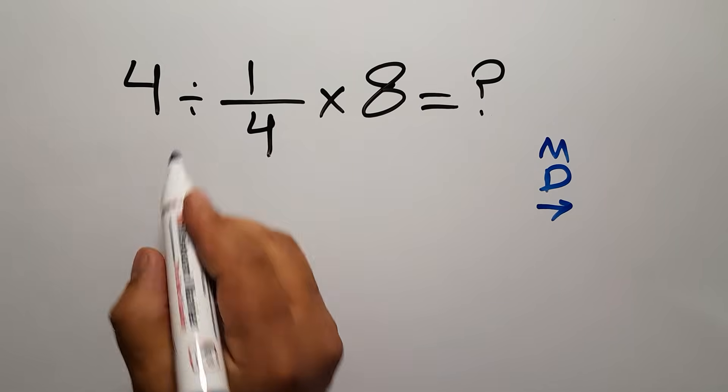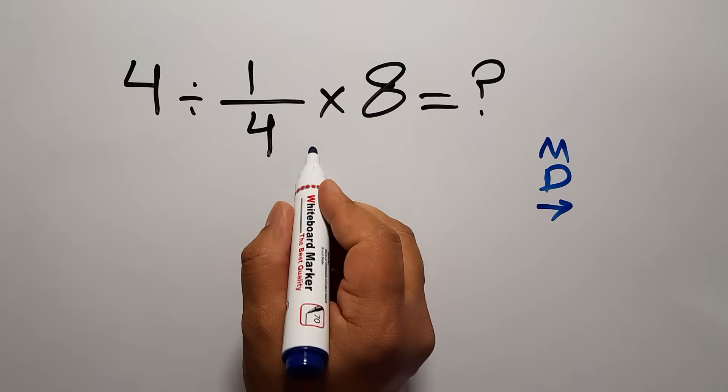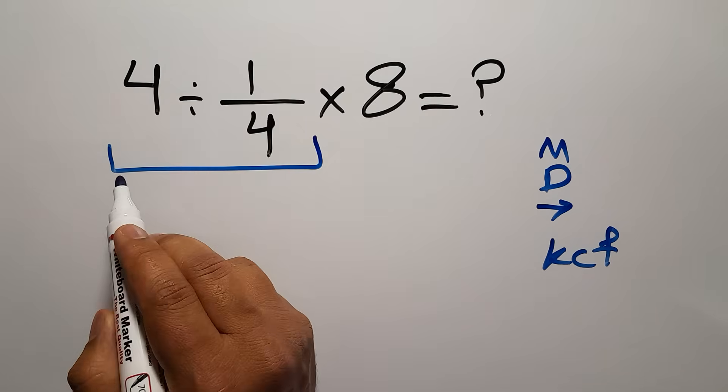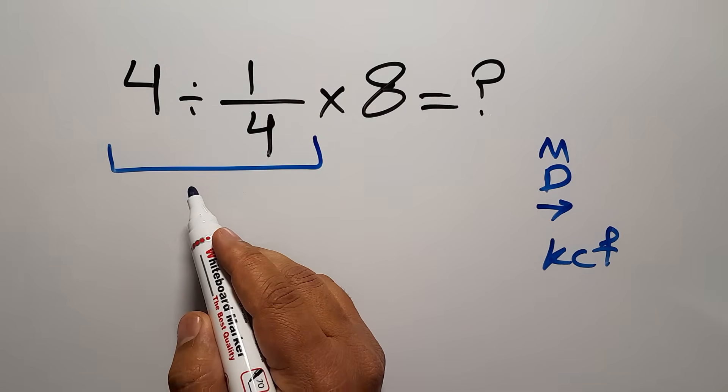So first, this division: 4 divided by 1 over 4. According to the KCF rule, K stands for keep, C stands for change, and F stands for flip. Keep the first fraction, change division to multiplication, and flip the second fraction.